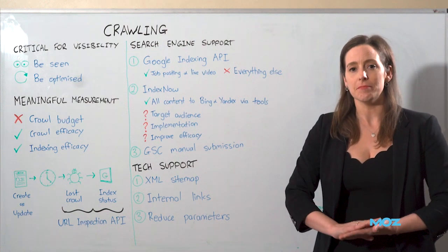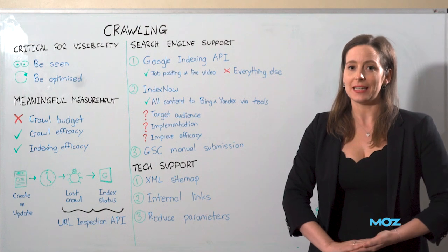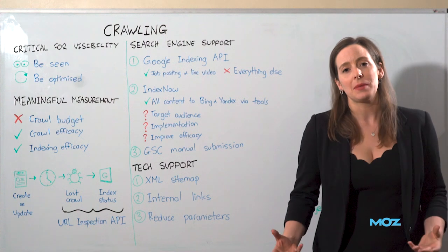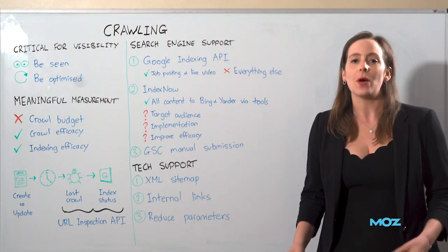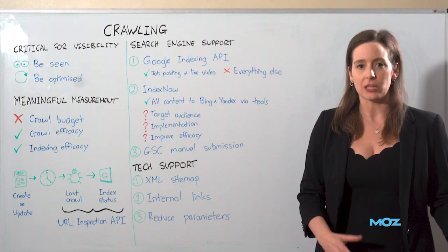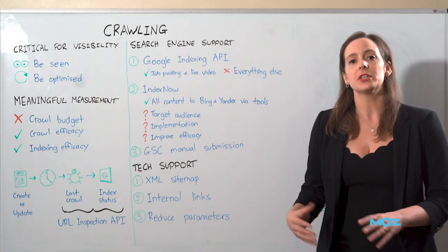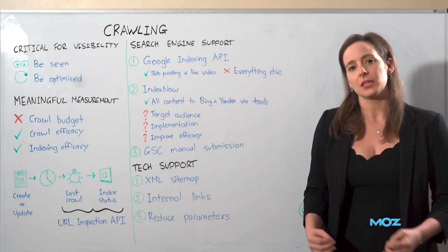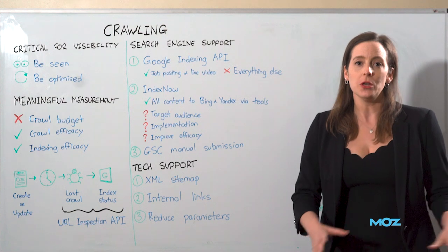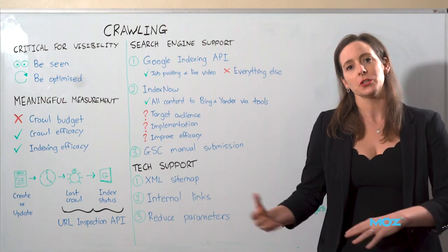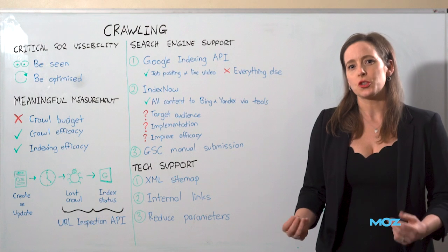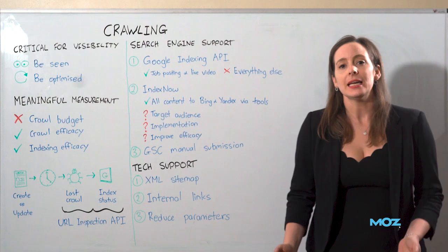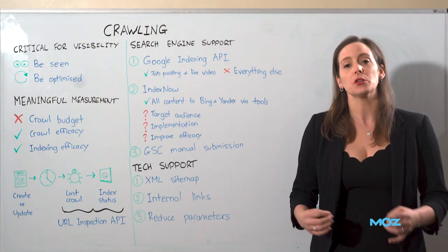Crawling is fundamental and it's all based on Googlebot's somewhat fickle attentions. A lot of the time people say it's really easy to understand if you have a crawling issue — you log into Google Search Console, you go to the exclusions report, and you see if you have the status 'discovered, currently not indexed.' If you do, you have a crawling problem. And to some extent this is true, but it's not quite that simple, because what that's telling you is if you have a crawling issue with your new content.